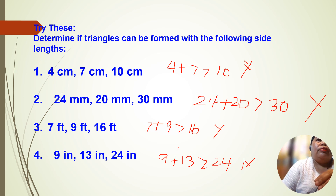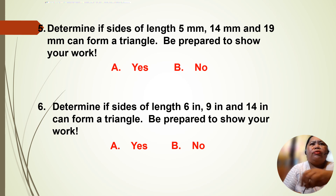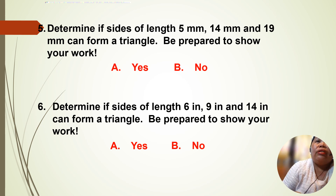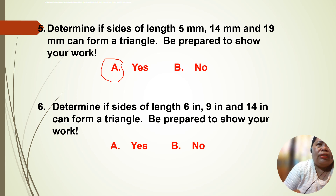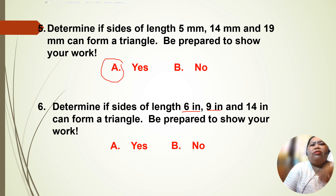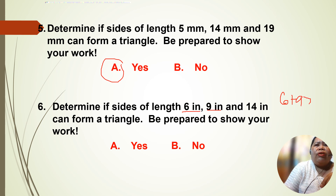Determine if sides of length 5, 14, and 19 can form a triangle. Here, 5 plus 14 is equal to 19, so that is not possible — the answer is no. Number 6: determine if sides of length 6, 9, and 14 can form a triangle. 6 plus 9 equals 15, which is greater than 14. So the answer is yes.